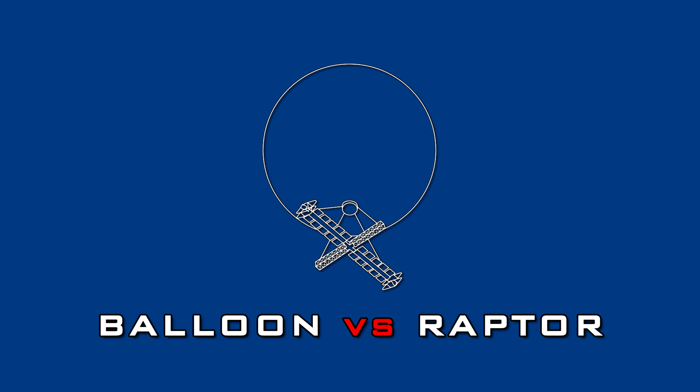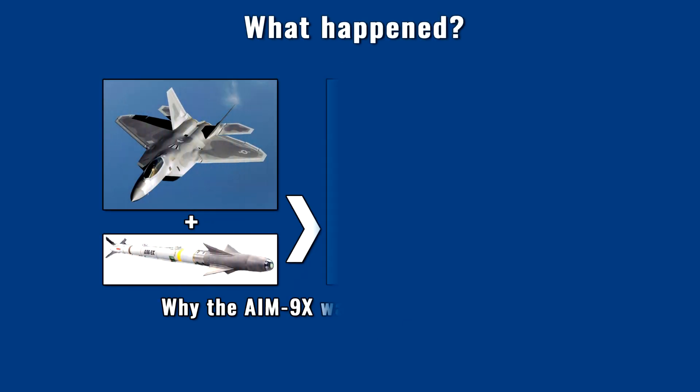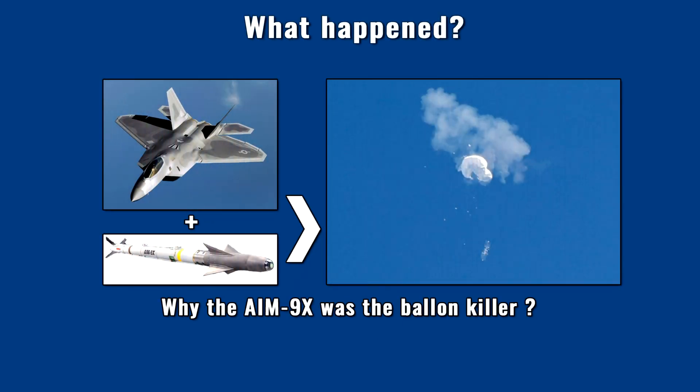Let's start at the end of the story. The Chinese balloon was eventually downed by an F-22 Raptor fighter jet with an AIM-9X Sidewinder missile. Interestingly, many people on social media commented that this was unacceptable because it wasted taxpayers' money due to the expensive missile. Many also argued that using a missile meant the Americans missed the opportunity to analyze the balloon's payload.